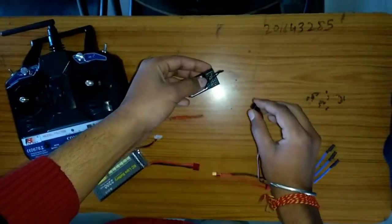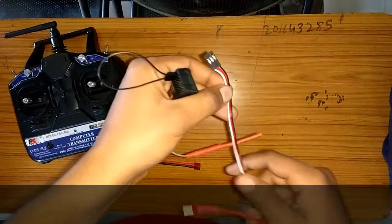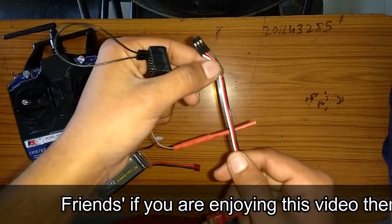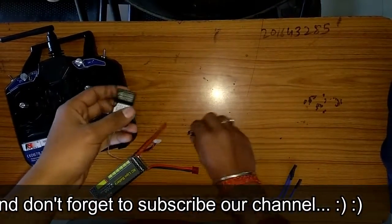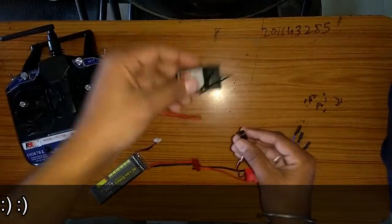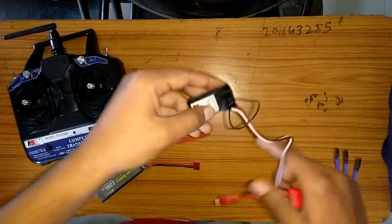Now you have to take the three colored wires of the ESC which are connected to the battery eliminator circuit of the electronic speed controller. The function of the battery eliminator circuit is to supply a constant +5V to the receiver.